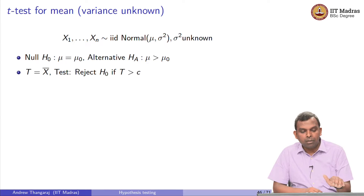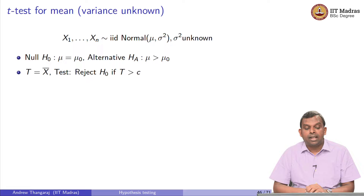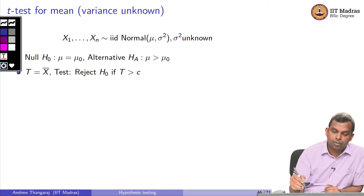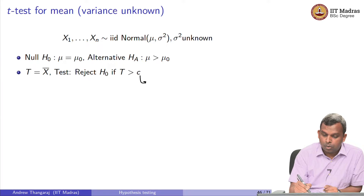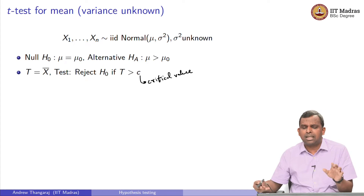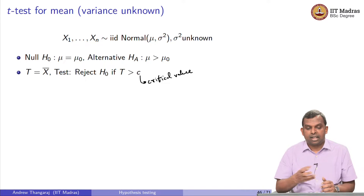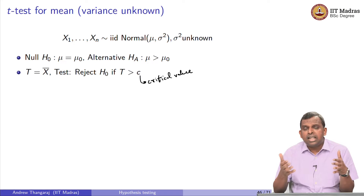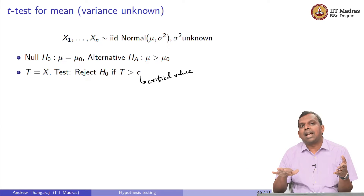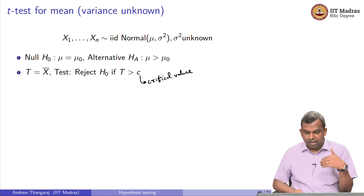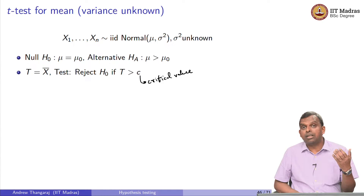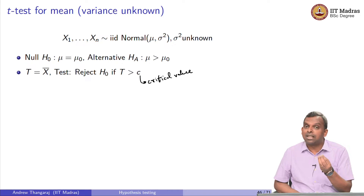Given that this is a right-sided example, the test is: you reject the null if T is greater than some critical value C. What is the difference between the T test and the Z test? The variance is unknown now — I do not know sigma squared — so I am going to be estimating the variance from the samples. Naturally, the significance level computation will involve the T distribution rather than the Z distribution.